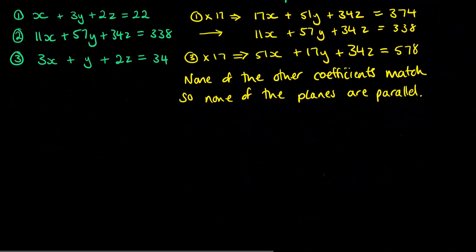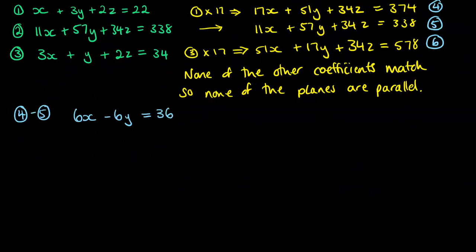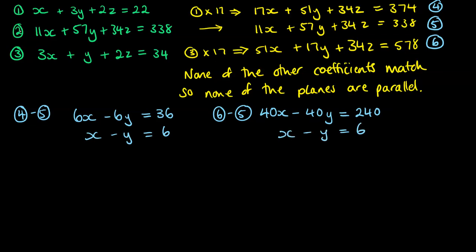We're going to carry on with that algebra. If we do equation number 4 minus equation number 5, we get 6x minus 6y equals 36. Then we'll do equation number 6 minus equation number 5, and we'll get 40x minus 40y equals 240. Simplifying each of those down, we get x minus y equals 6. If we lined them up and try to eliminate either the x or the y, we end up with 0 equals 0. This is something that is always true, no matter what x, y, and z are.